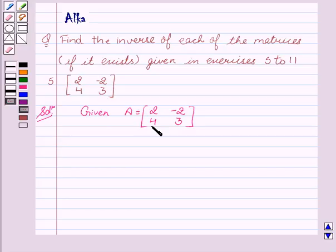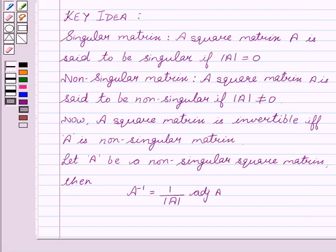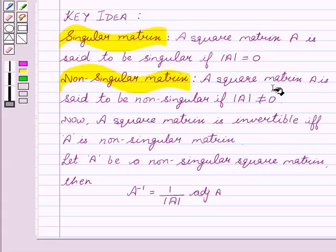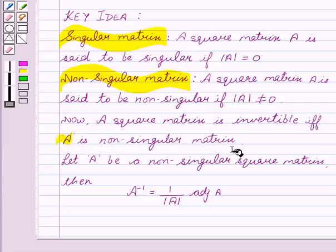Now let me tell you the basic idea behind the question. There are two types of matrices: singular matrix and non-singular matrix. A square matrix A is said to be singular if determinant of A equals 0, and non-singular if determinant of A is not equal to 0. A square matrix is invertible if and only if A is a non-singular matrix, that is, determinant of A is not equal to 0.